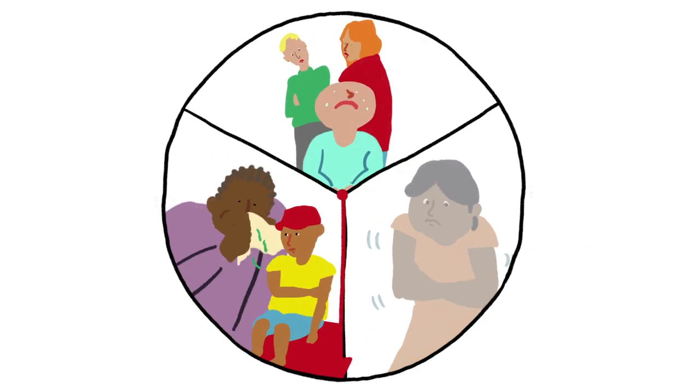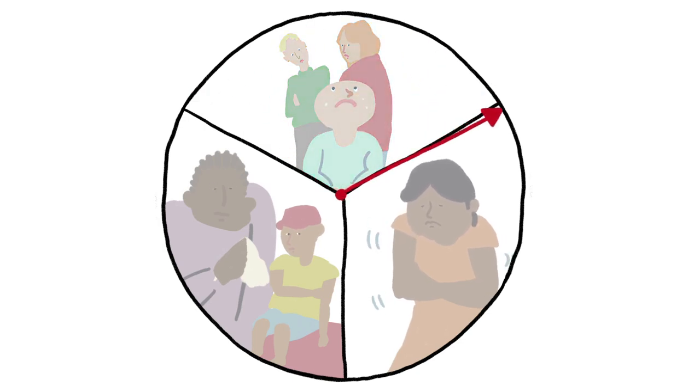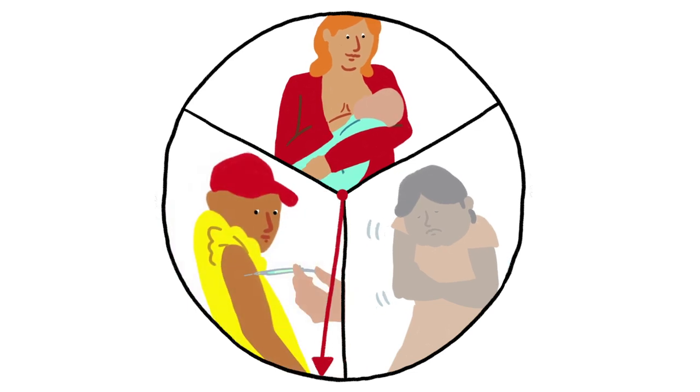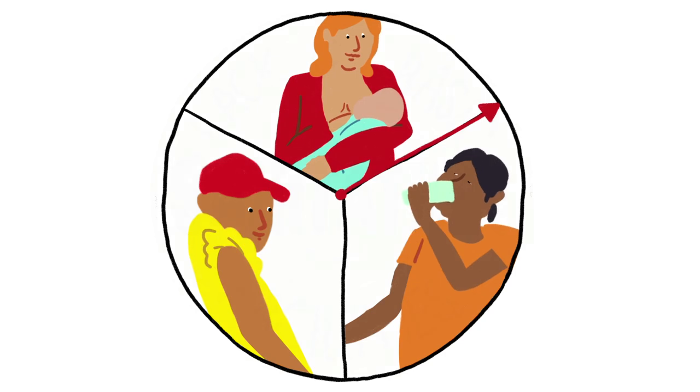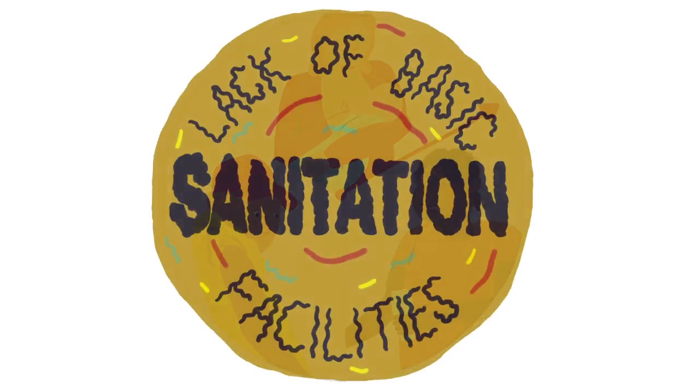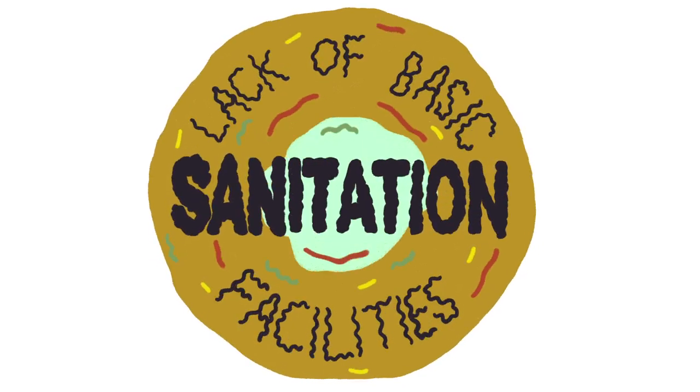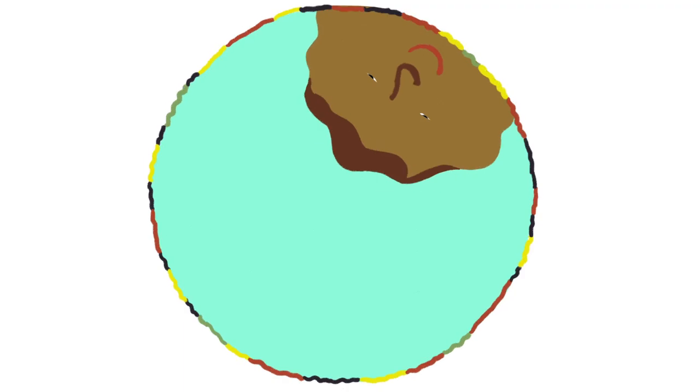A child dies every three seconds from infectious disease, but public health interventions can prevent this by promoting things like breastfeeding, immunization, and antibiotics. Where children die because they have no access to safe water or basic sanitation, public health programs can make water safe and conditions sanitary.